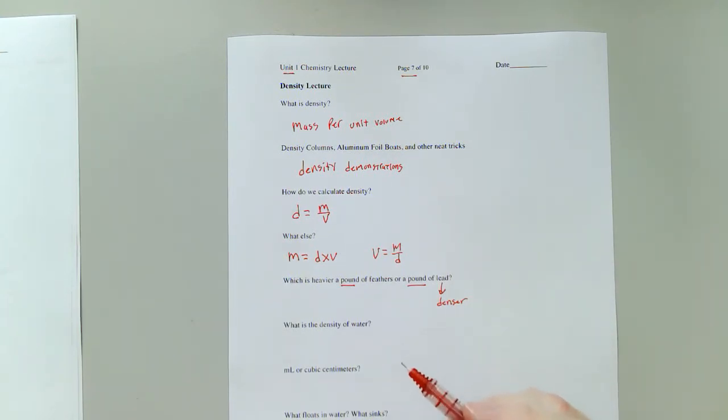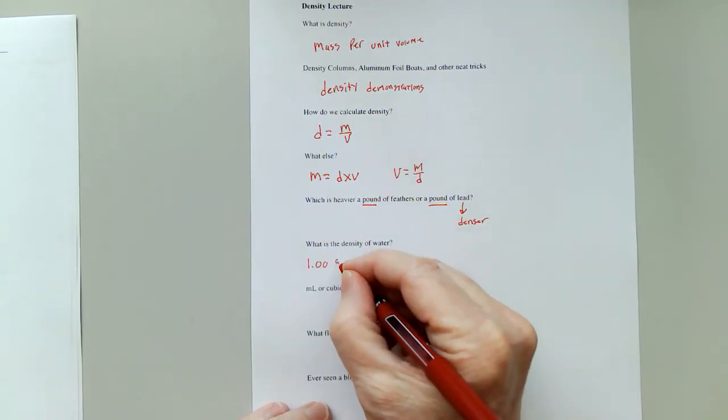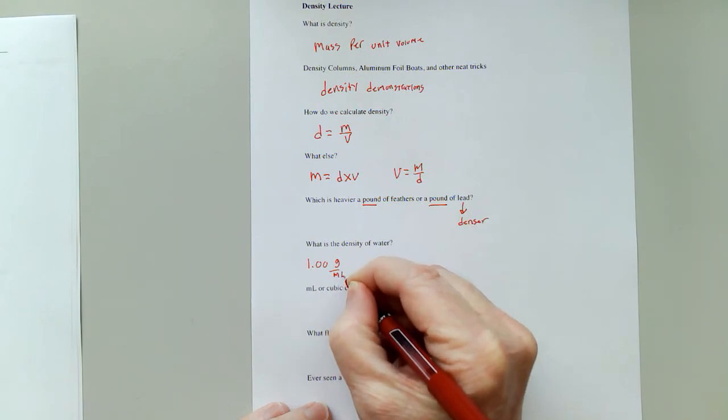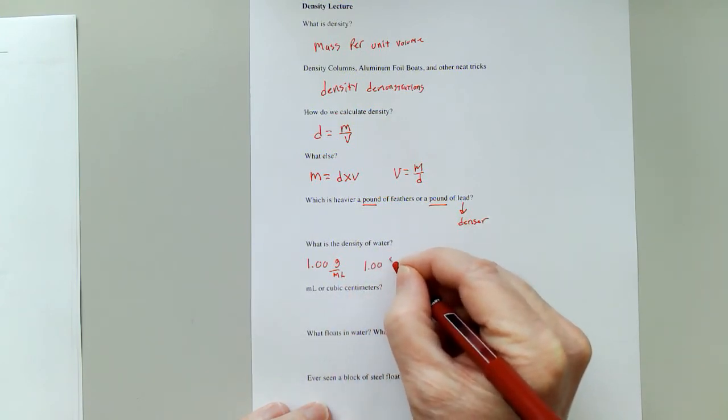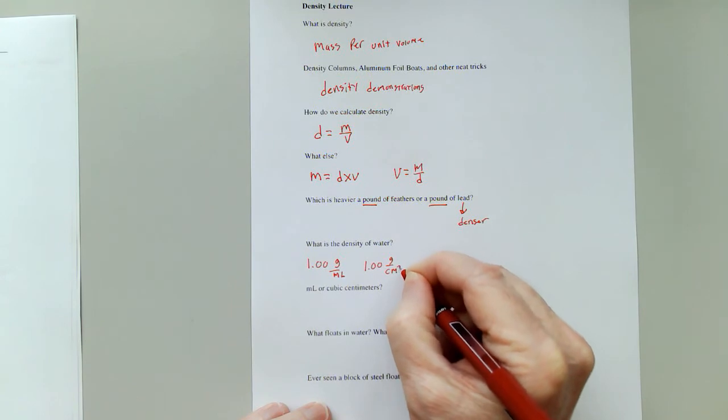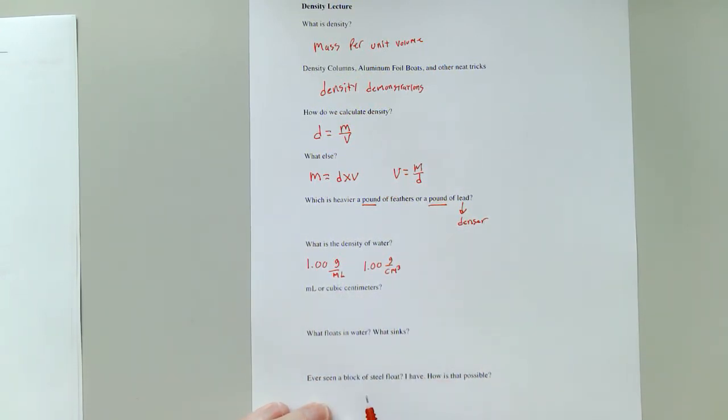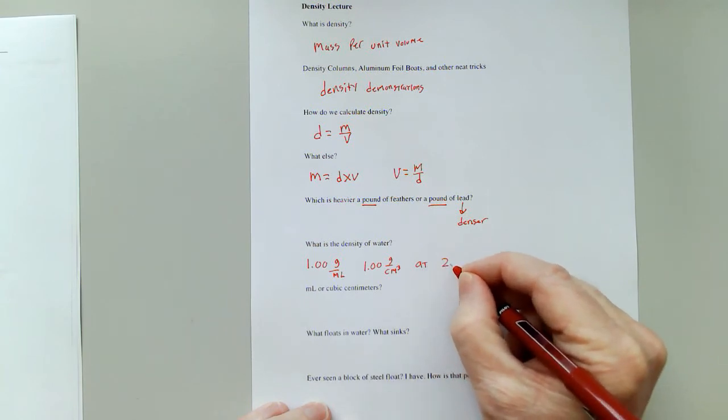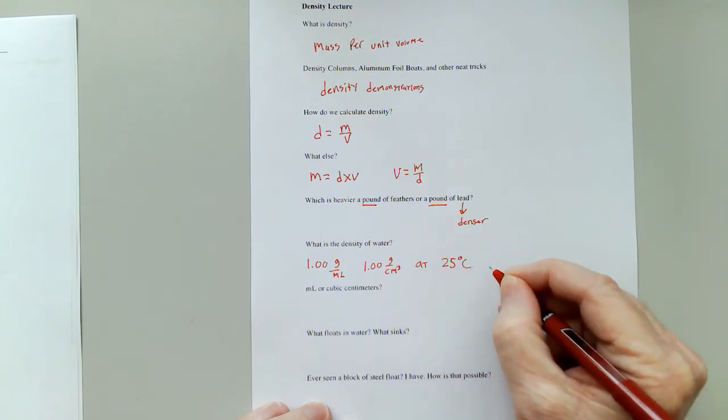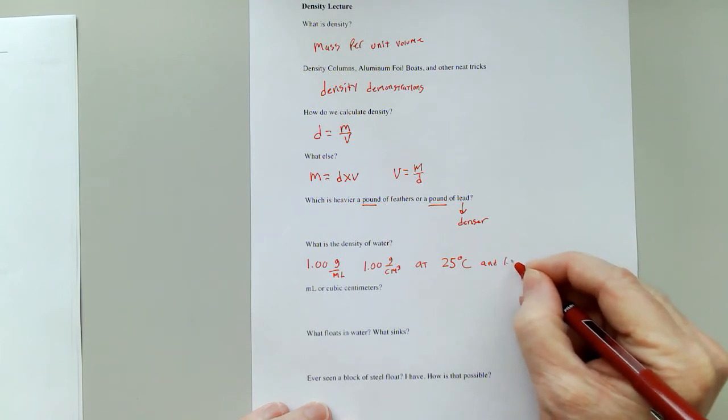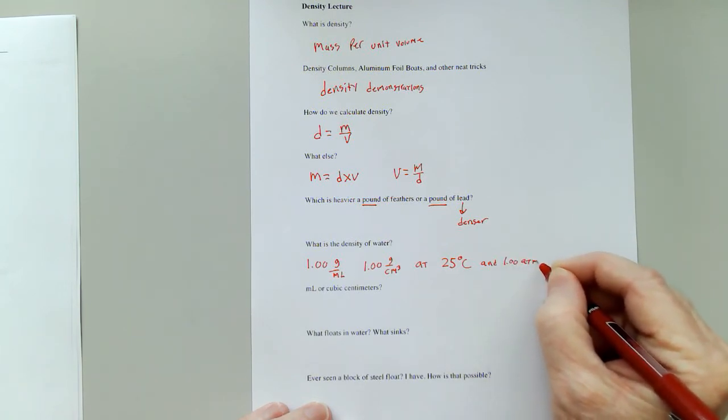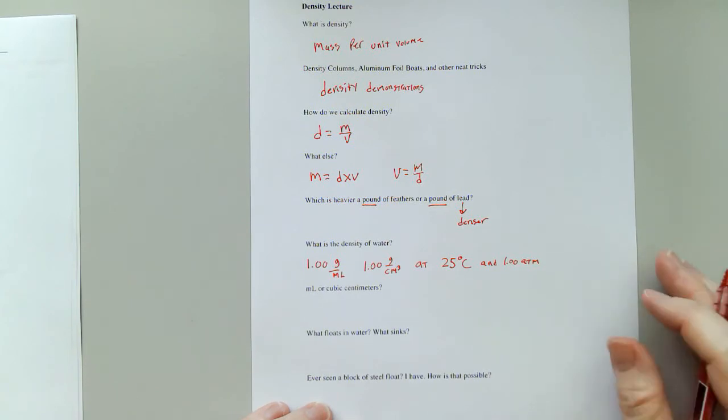There is one and only one value of density that I expect you to know, and that is the density of water, 1.00 grams per milliliter, or you could say it as 1.00 grams per centimeter cubed. Most of the time we would use milliliters because it's a liquid. And this is at 25 degrees Celsius and 1.00 atmospheres of pressure, which is pretty much just the standard conditions that we normally work under.